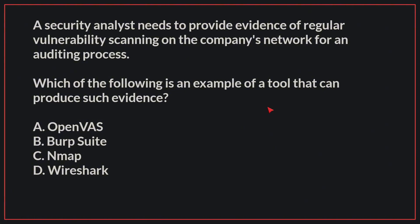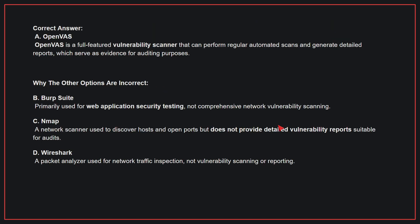A security analyst needs to provide evidence of regular vulnerability scanning on the company's network for an auditing process. Which of the following is an example of a tool that can produce such evidence? The correct answer is A: OpenVAS. OpenVAS is a full-featured vulnerability scanner that can perform regular automated scans and generate detailed reports, which serve as evidence for auditing purposes.